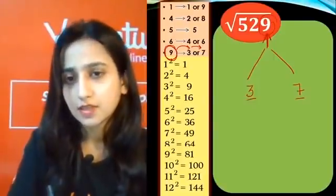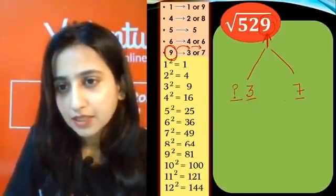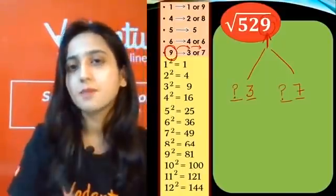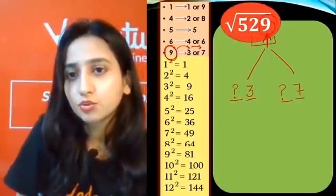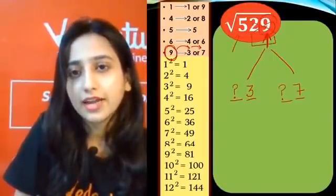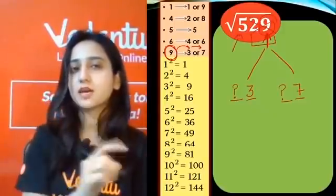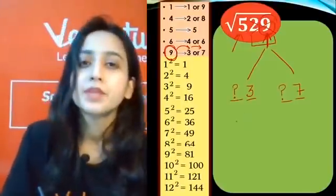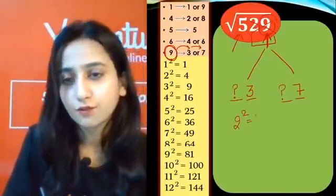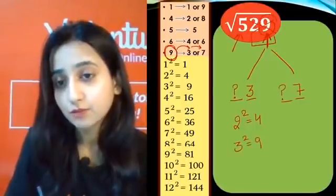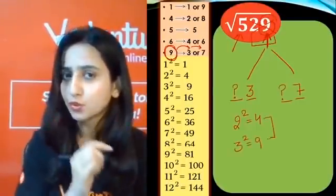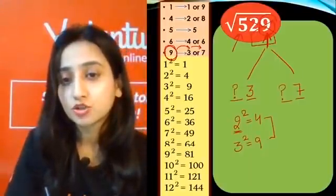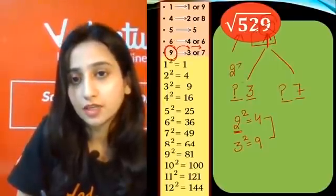Now for the tens place — the whole question comes down to this. Ignore the last two digits and look at the remaining digits. The remaining number is 5. Now look at the squares: 2 squared is 4 and 3 squared is 9. So 5 lies between 4 and 9, meaning the tens digit is 2. Our two possibilities are 23 or 27.